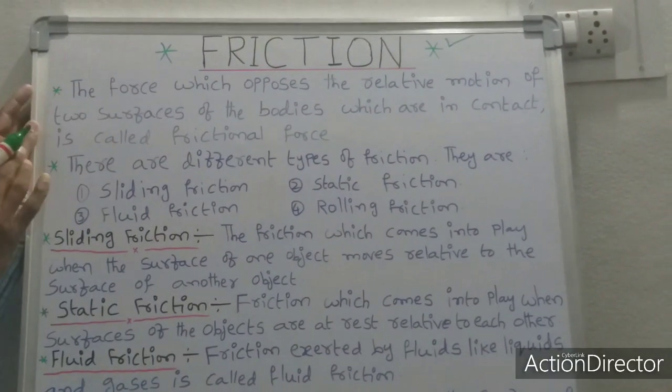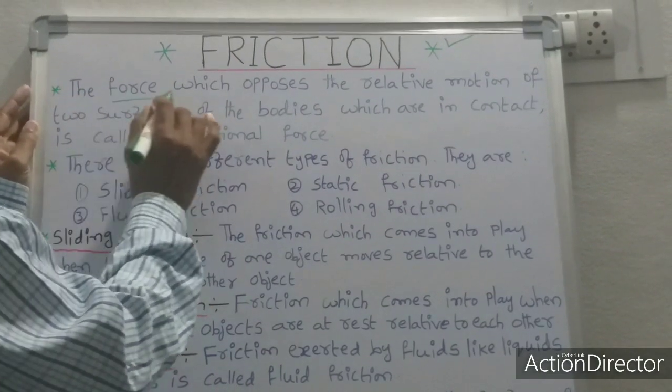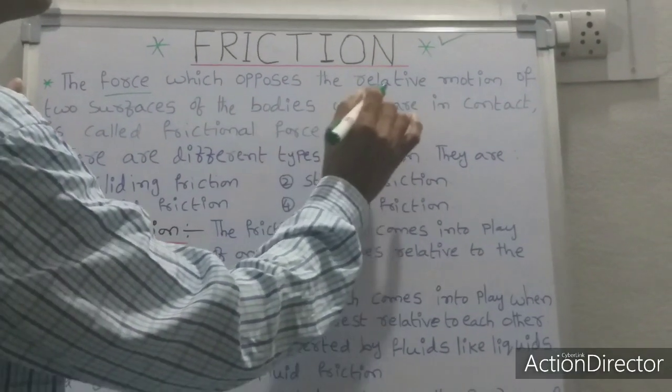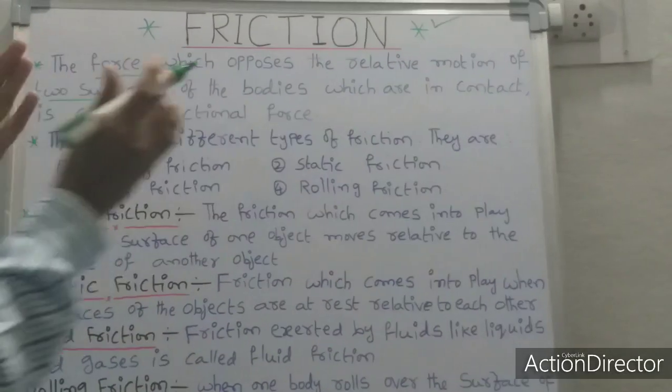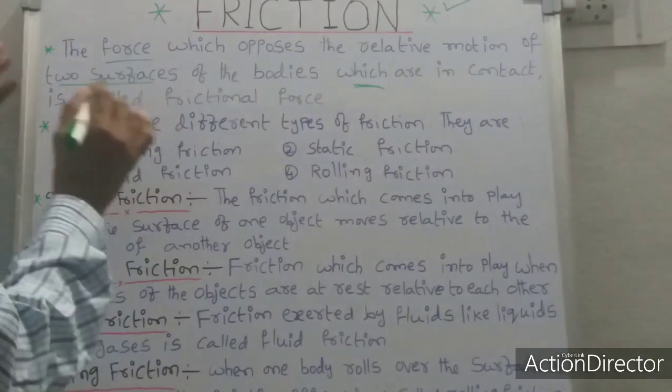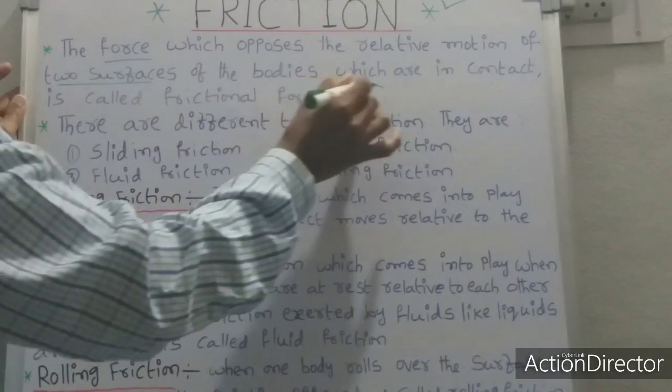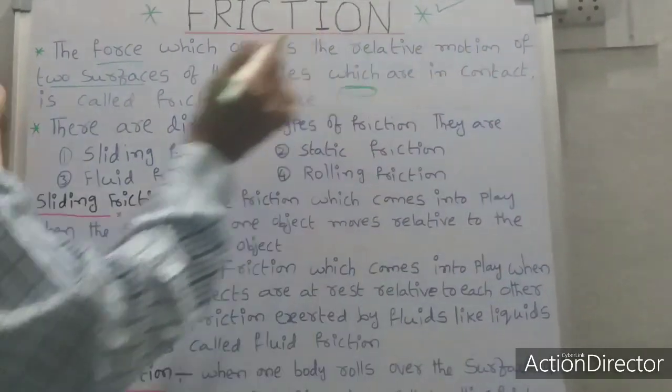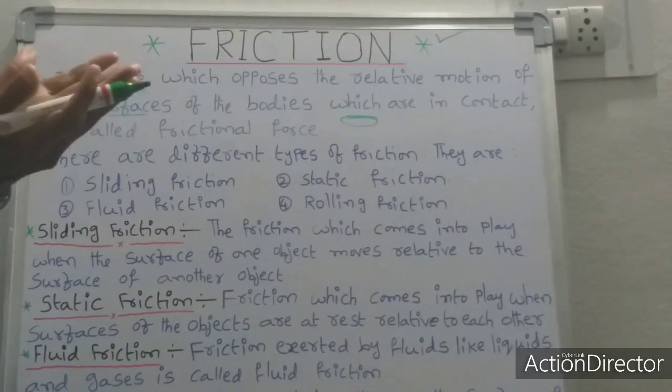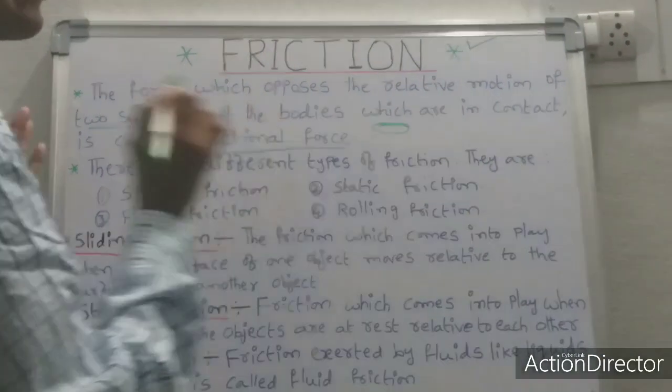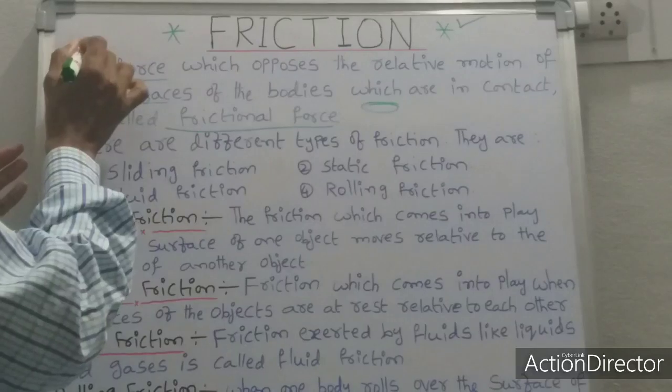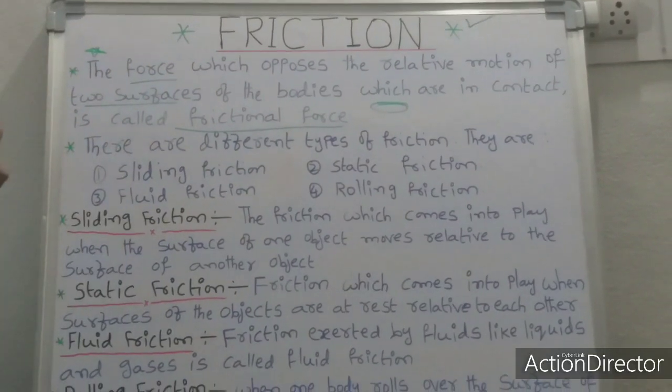Friction definition students: the force which opposes the relative motion of two surfaces. Here two surfaces students, two surfaces of the bodies which are in contact. Contact compulsory is called frictional force students. Most important definition.